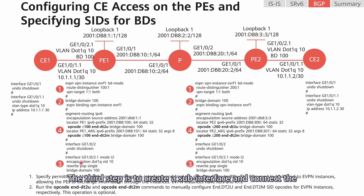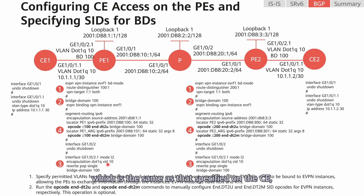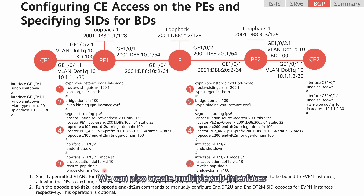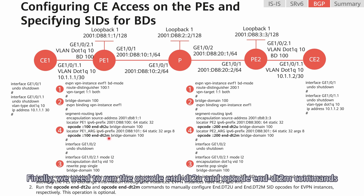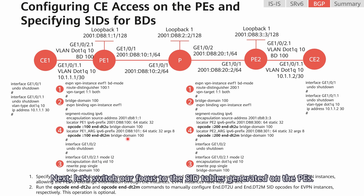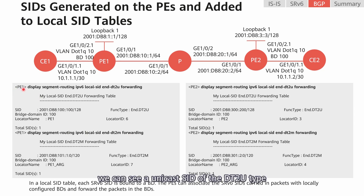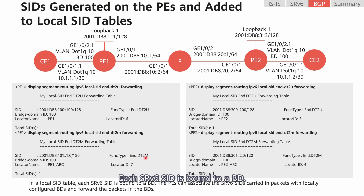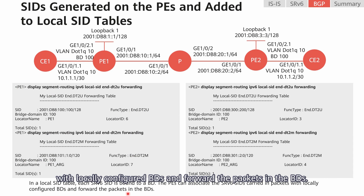The third step is to create a sub-interface and connect the PE to the corresponding CE through the sub-interface. Specify a VLAN ID — the same as that specified on the CE — and add the sub-interface to the BD. We can also create multiple sub-interfaces and add them to the same BD. Finally, we need to run the End.DT2U and End.DT2M commands to configure a unicast SID and a BUM SID, respectively, for the BD under the locator. In the local SID table on PE1, we can see a unicast SID of the DT2U type and a BUM SID of the DT2M type. Each SRv6 SID is bound to a BD, and the PEs can associate the SRv6 SIDs carried in packets with locally configured BDs to forward packets.